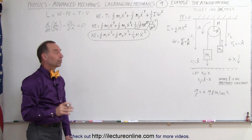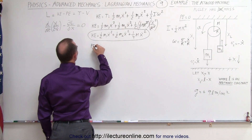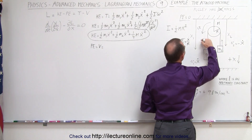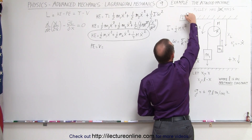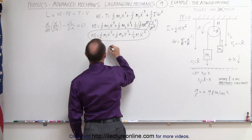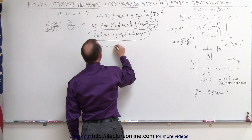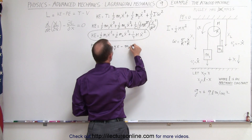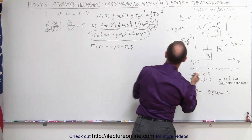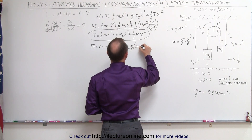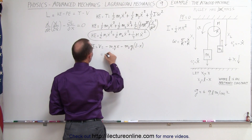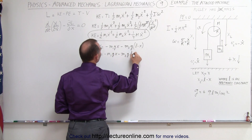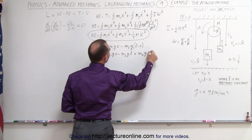Now we're ready to find the potential energy. The potential energy, which can also be written as V, is equal to — and we're going to do it in reference to the ceiling, calling that potential energy equal to zero — so we'll have negative potential energies: minus m1 g times the distance x, minus m2 g times the distance l minus x. This can then be written as minus m1 g x minus m2 g l plus m2 g times x.